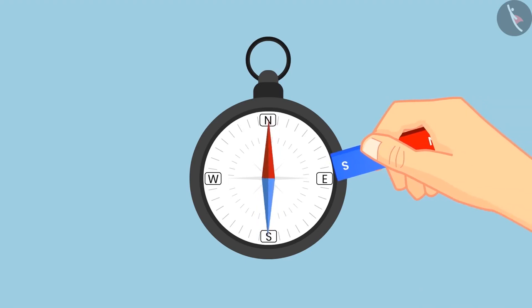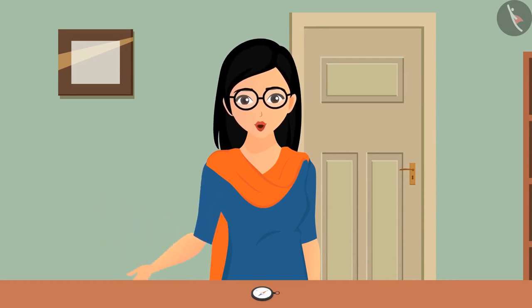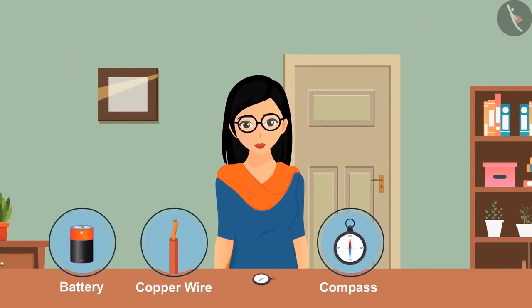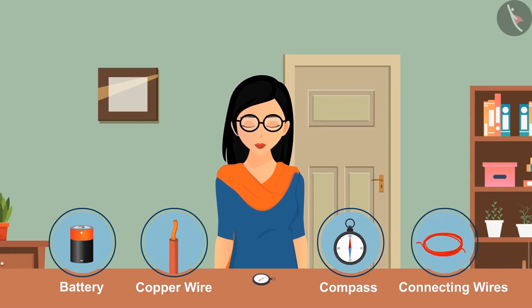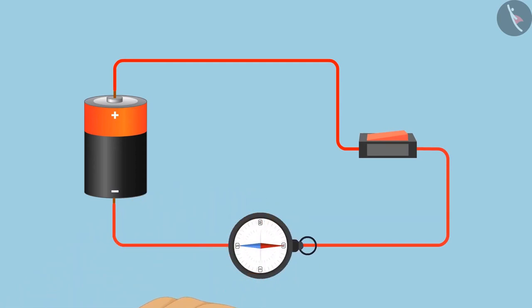Let's perform this experiment to understand Oersted's work. To perform this experiment, we need a battery, a piece of thick copper wire, a compass, and connecting wire. The battery must be connected to the two ends of the copper wire via switch. Place the compass over the copper wire in such a way that the needle of the compass and the copper wire are parallel to each other.